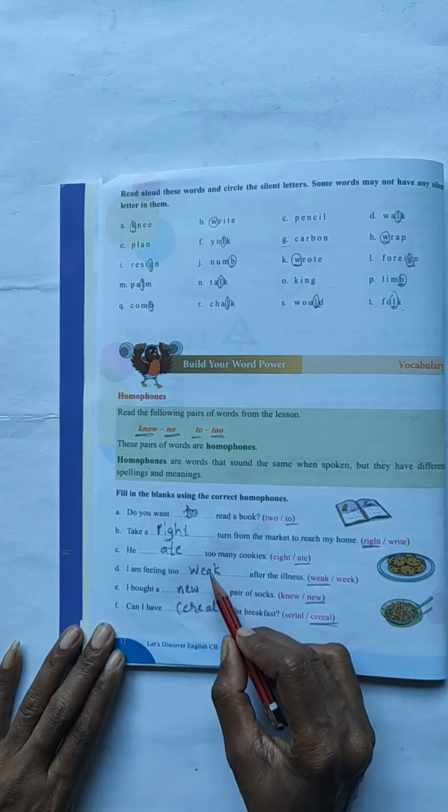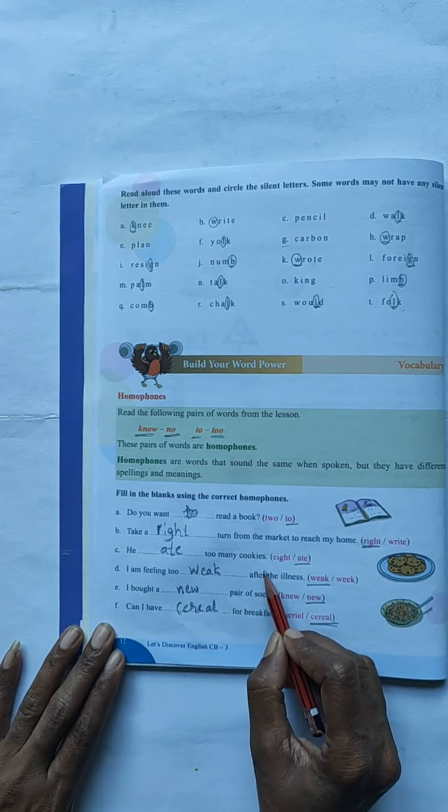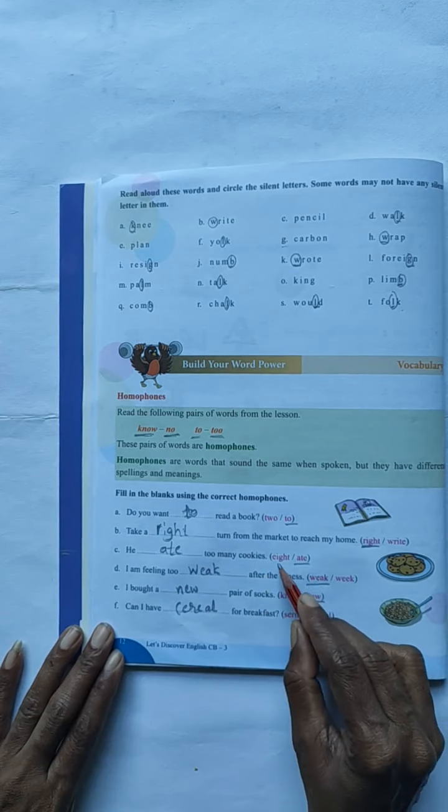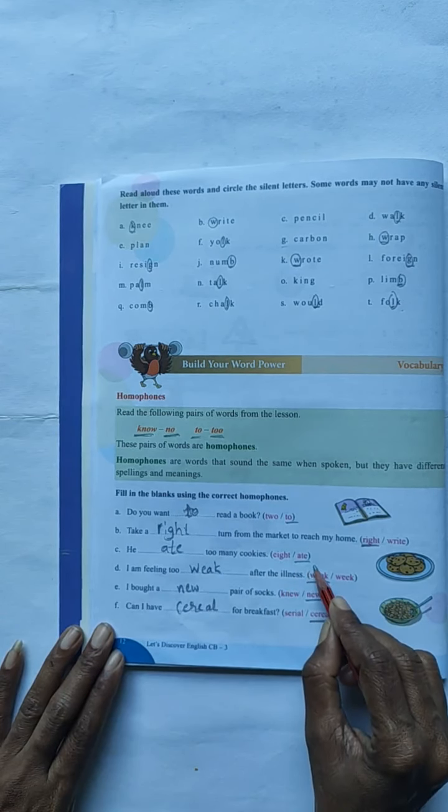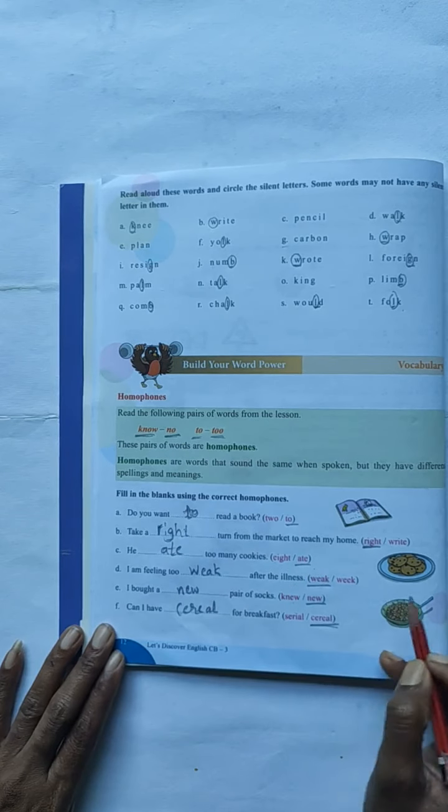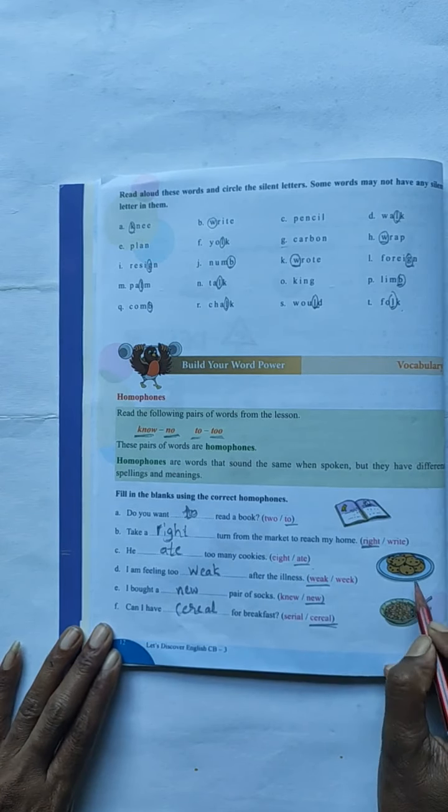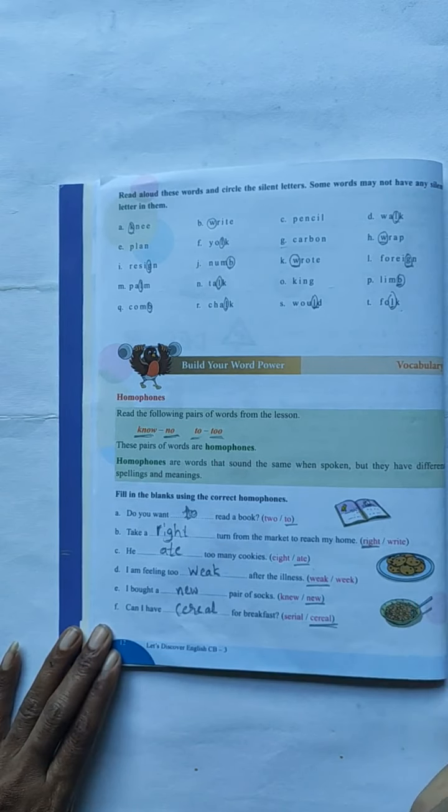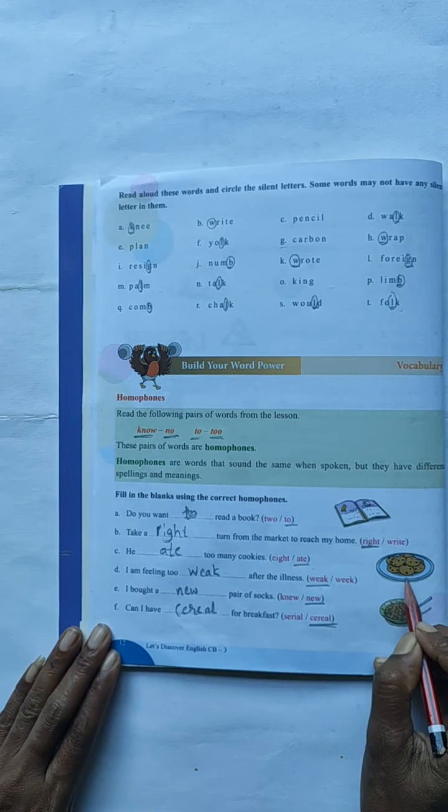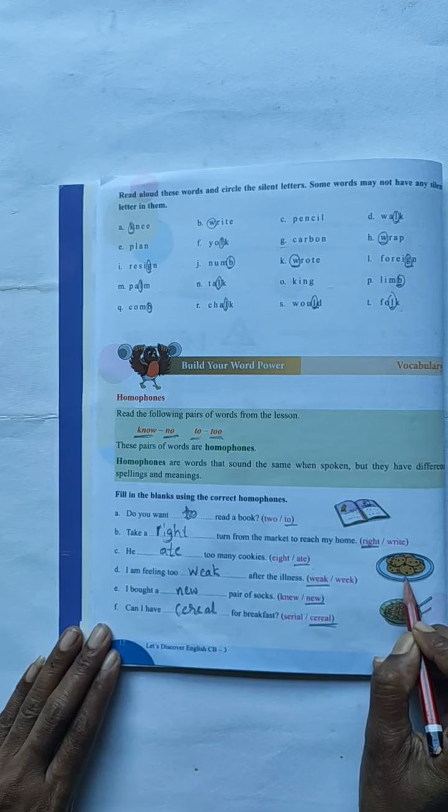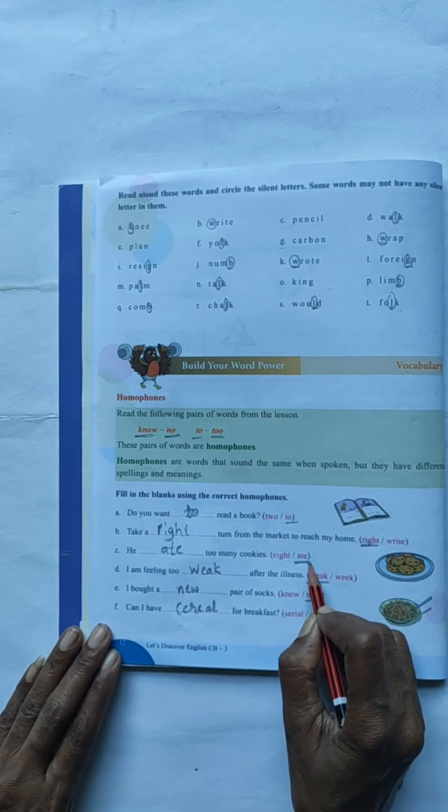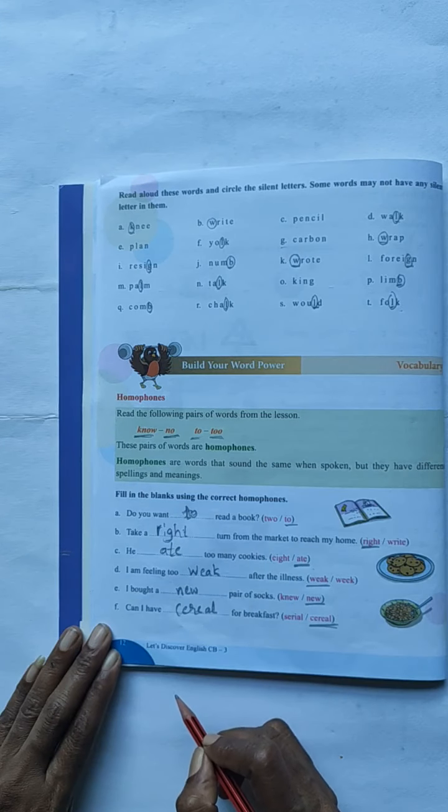He dashed too many cookies. E-I-G-H-T-8 or A-T-E-8. They have given here food picture also. You have to see the picture. Then you have to understand what they have given here. Then which we want to write. You have to write here A-T-E. He ate too many cookies.